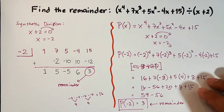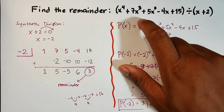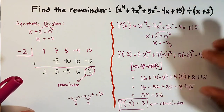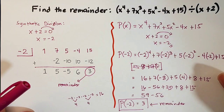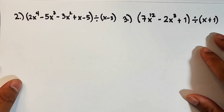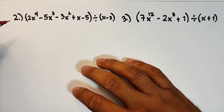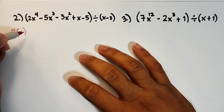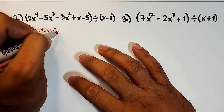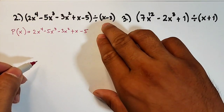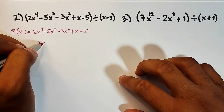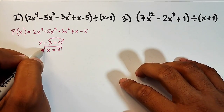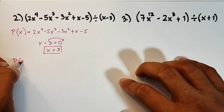We had a long polynomial, but you can use either synthetic division or the remainder theorem. The remainder theorem is faster than synthetic division or long division. Let's move on to item number 2. We have p of x equals 2x to the 4th power minus 5x cubed minus 3x squared plus x minus 5, divided by x minus 3. Setting x minus 3 equal to 0 gives x equals positive 3, so we evaluate p of 3.